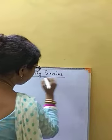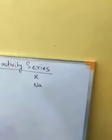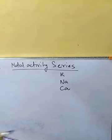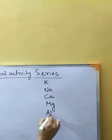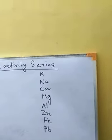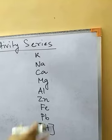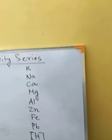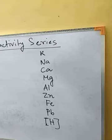At the top we have potassium, which has the highest activity in the metal activity series. After potassium comes sodium, then calcium — potassium, sodium, and calcium are very active metals. Next comes magnesium, then aluminum, then zinc, then iron, then lead. Then we have hydrogen. Hydrogen is also kept in this activity series, and from hydrogen we can compare whether a metal is more active or less active than hydrogen.